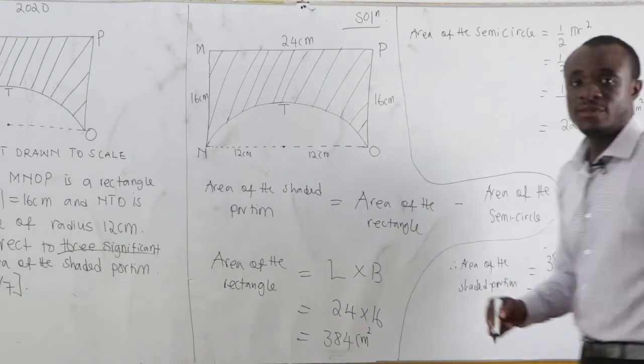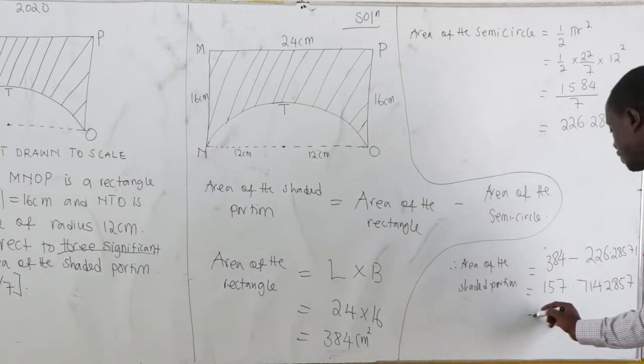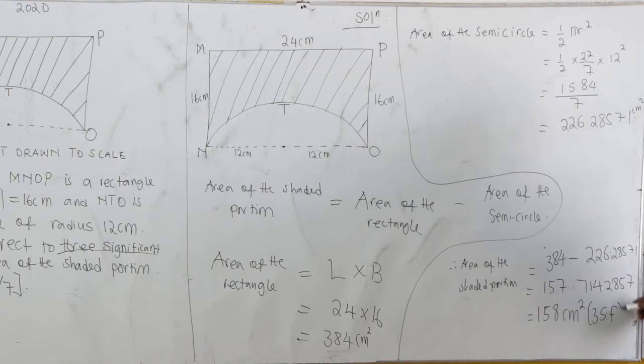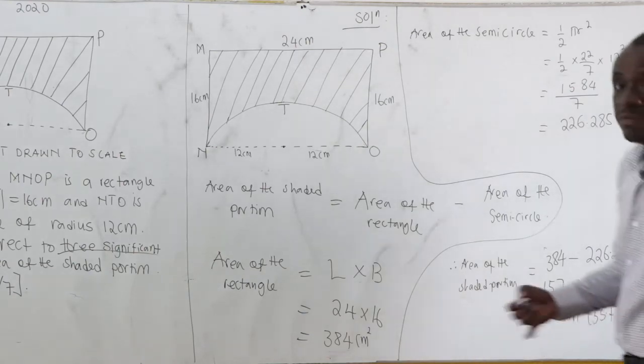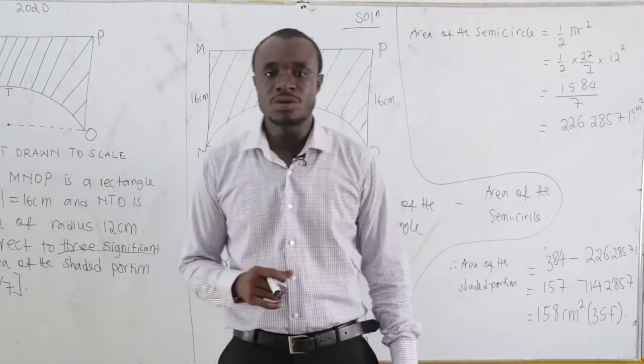So this is the first significant figure, second, third. Now, what is following is 7, and the next is 1, so we round down. So we have 158 cm squared. That is 3 significant figures. Very trivial. Please make sure that you subscribe and share the links also to friends.